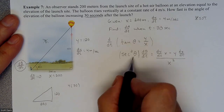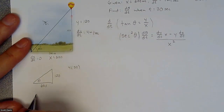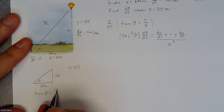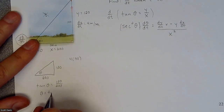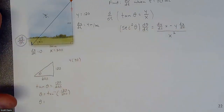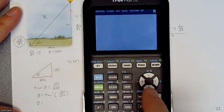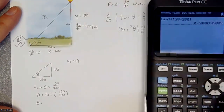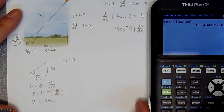We still need theta. Using tangent of theta equals 120 over 200, theta equals inverse tangent of 120/200. Plugging that into the calculator (in radians mode), we get approximately 0.540 radians. We'll use that full value without rounding when we plug it in.